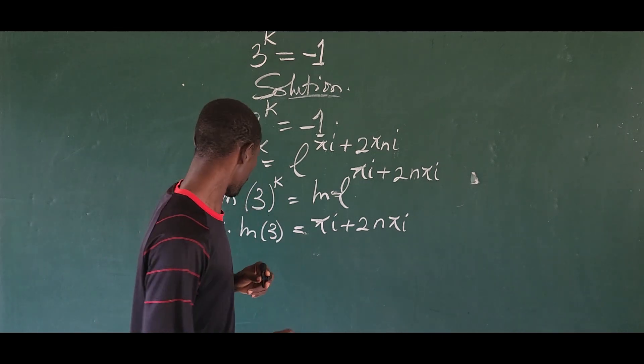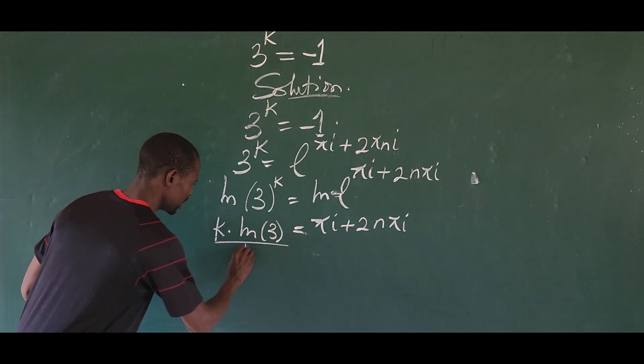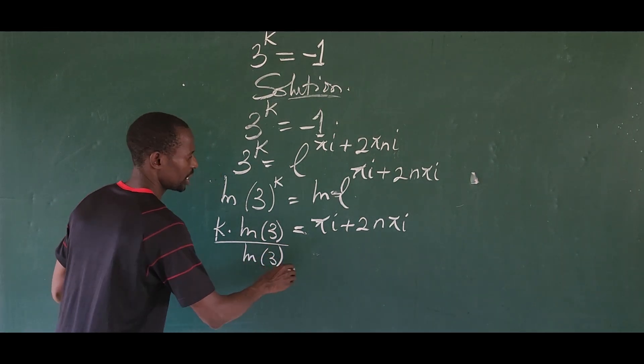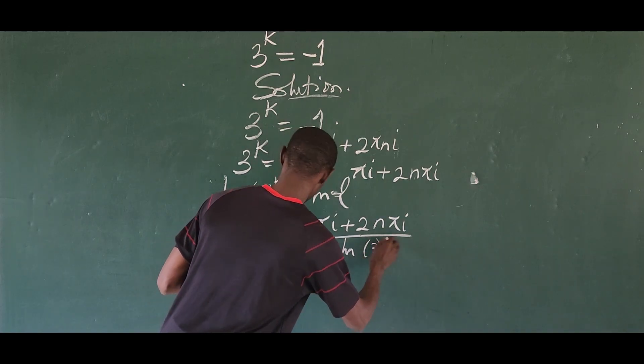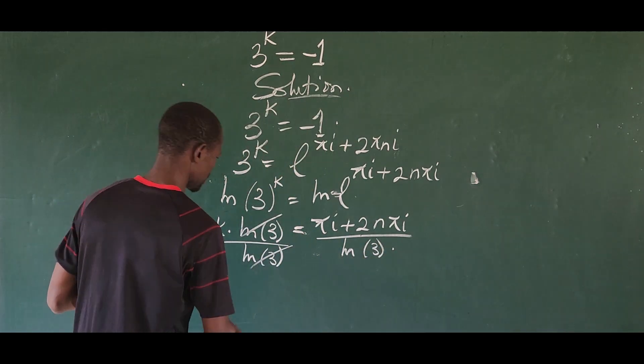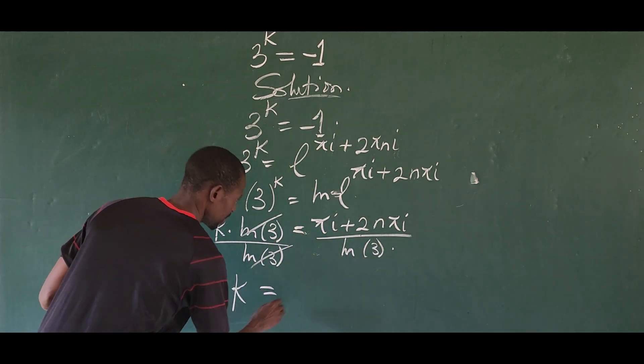Let's divide by the ln of 3. So if we divide by the ln of 3, we only divide this side by the ln of 3. So this leaves the system. So we now have k is equal to...